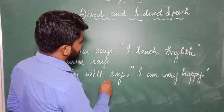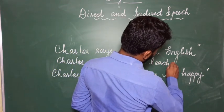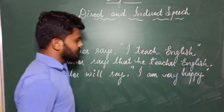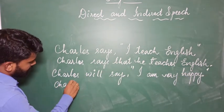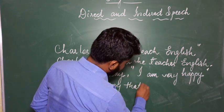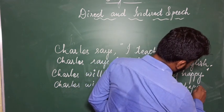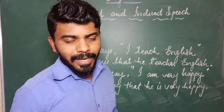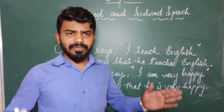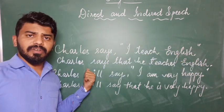Charles says that he teaches English. Charles will say that he is very happy. You must be wondering why I left the verbs as they are. I have given you a table where present becomes past, present continuous becomes past continuous, present perfect becomes past perfect. Why have I not changed these sentences? That is the condition I mentioned.